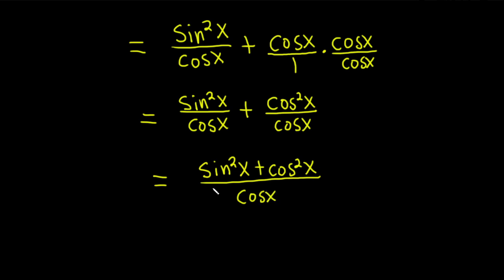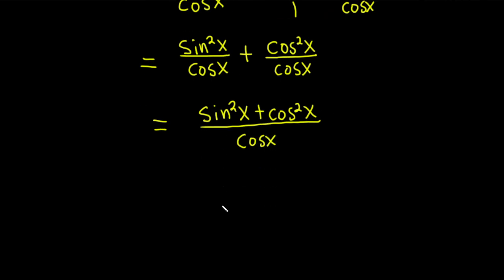And this is a super famous trigonometric identity. I always think, even if you barely know trig, this is the one identity everyone knows. Sine squared plus cosine squared is 1. So this is 1 over cosine x. And then 1 over cosine x is just the secant function. So this is the secant of x.